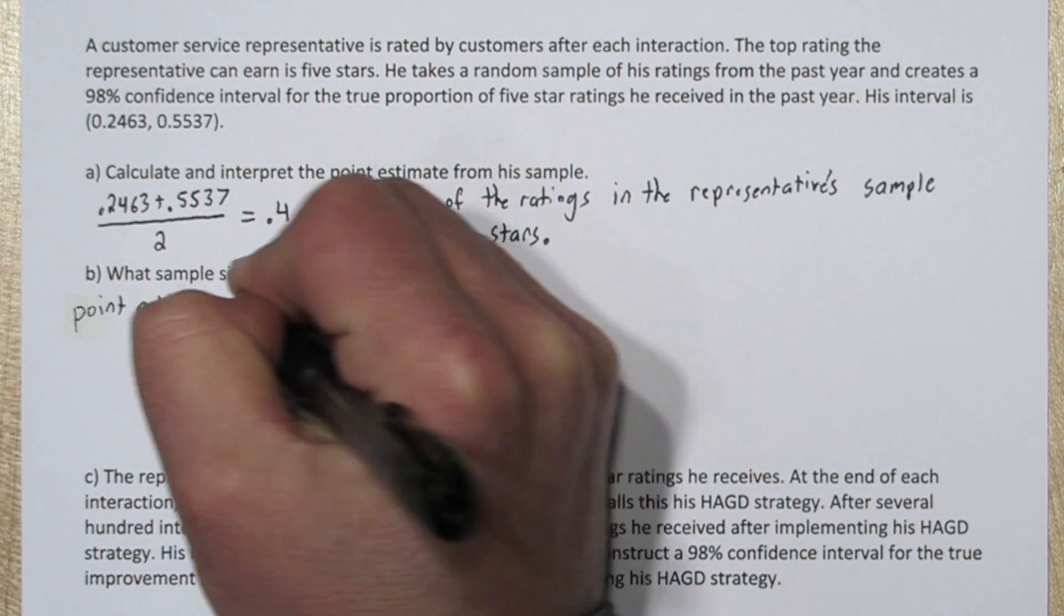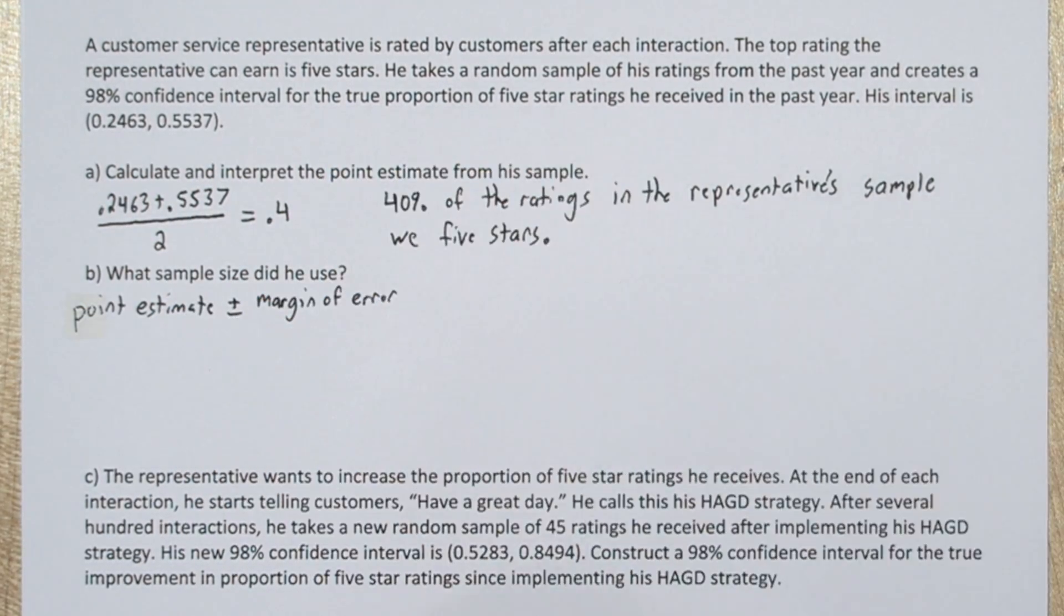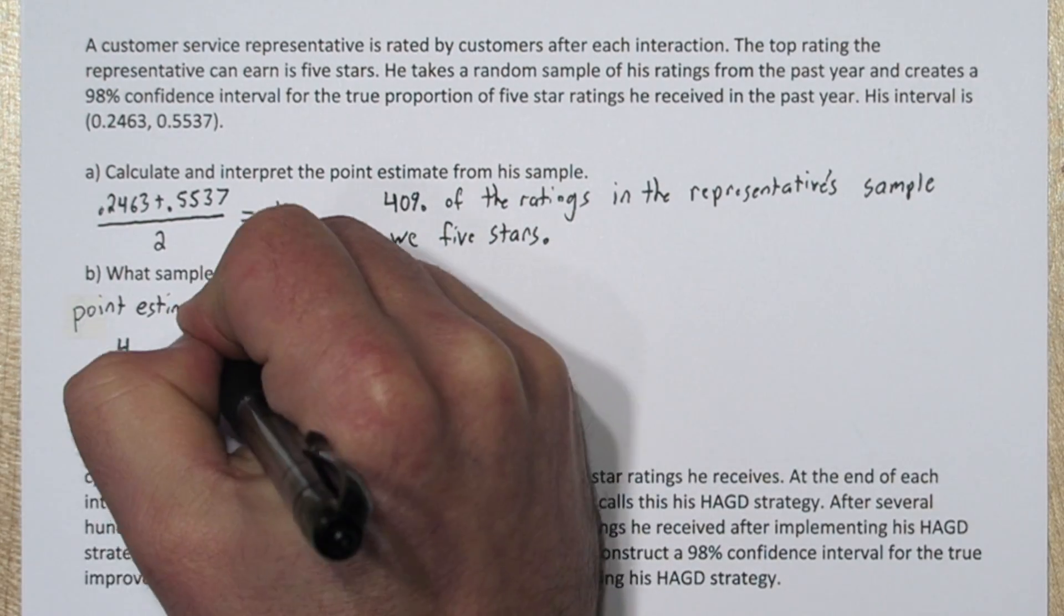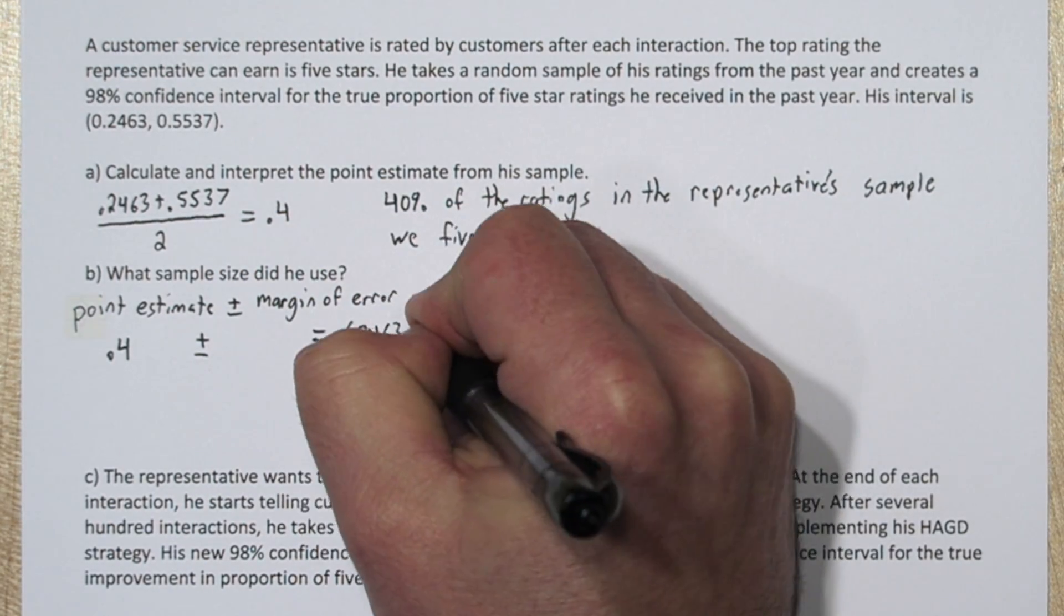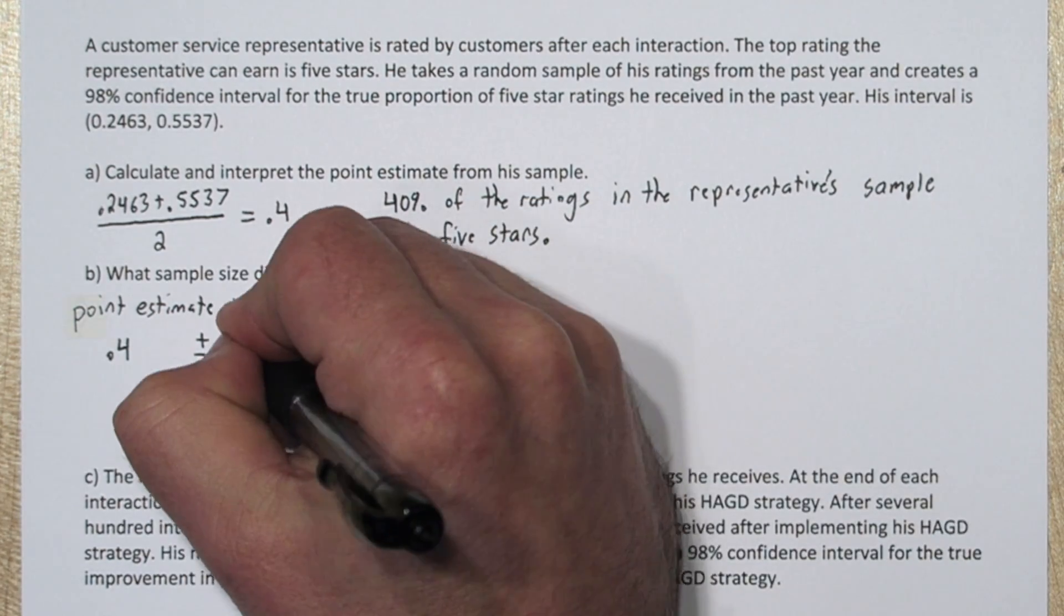Now every confidence interval is a point estimate plus or minus a margin of error. So if we just take our upper limit of our confidence interval and subtract out the 0.4, we can see that the margin of error is 0.1537.